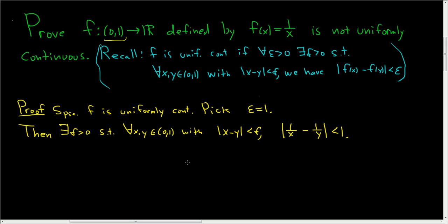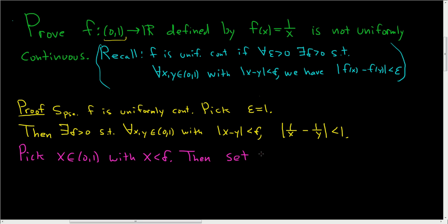So now let's try to violate this condition. We've already got our epsilon, we've already got our delta. We need to find two numbers x and y such that this is not true. Let's pick an x in this interval with x less than delta — we can certainly do that.